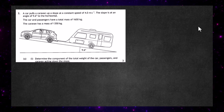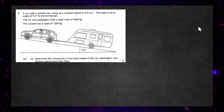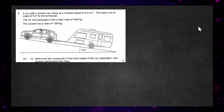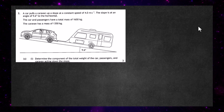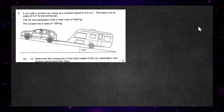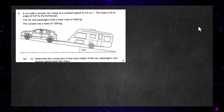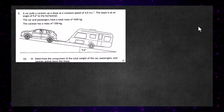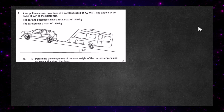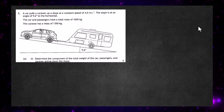Question 2 from Paper 2 of the 2024 Higher Physics Examination from the SQA. A car pulls a caravan up a slope at a constant speed of 4 metres per second. The slope is at an angle of 9.6 degrees to the horizontal. The car and passengers have a total mass of 1,650 kilograms and the caravan has a mass of 1,350 kilograms.